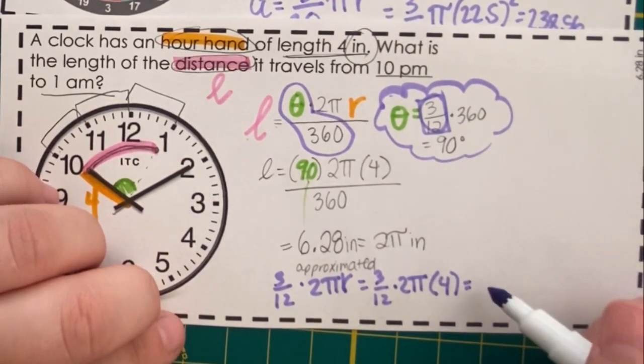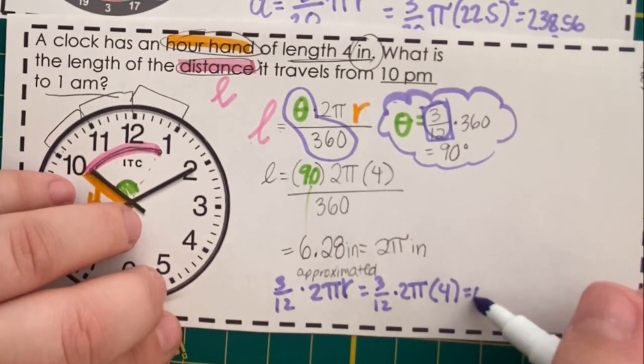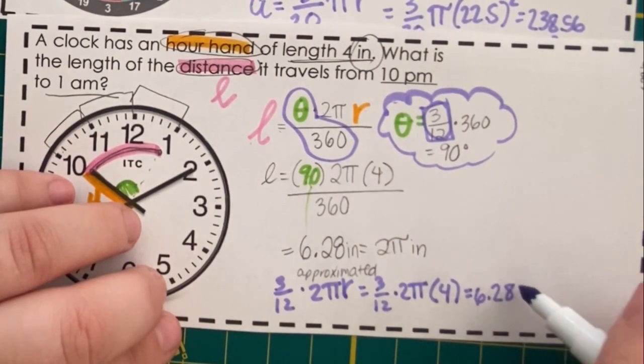And again, we'll be left with an arc length of 6.28 inches.